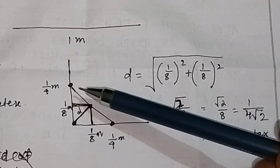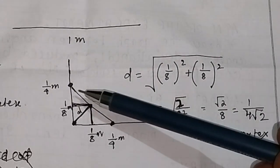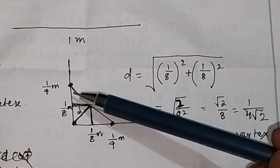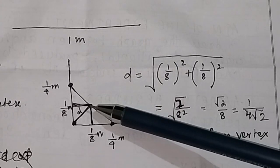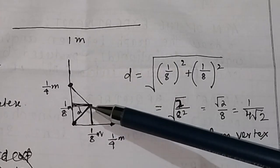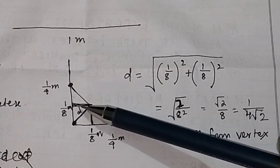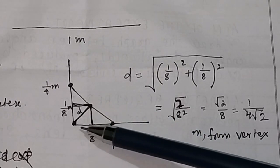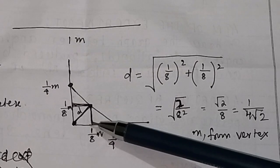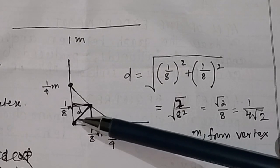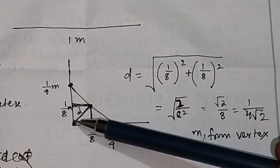So now we have a two-mass system. The center of mass of these two mass points will be located here. We draw a perpendicular from each point, and the distance from the vertex to each perpendicular is equal to 1/8 meter. This distance is also 1/8 meter on the other side.